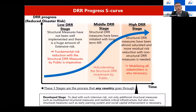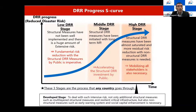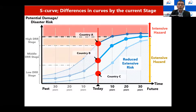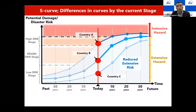We have in mind that every country follows an S-curve toward the end of their national DRR strategy. Each country has a different stage and path on the S-curve, depending on its historically accumulated disaster risk reduction efforts.